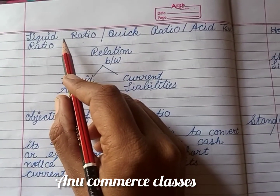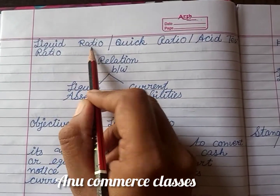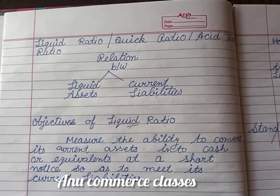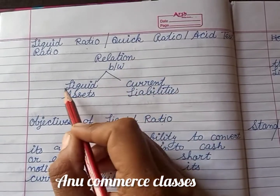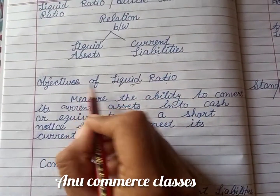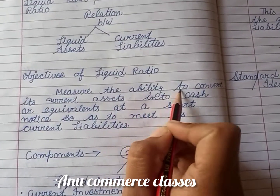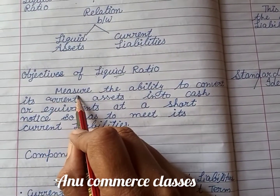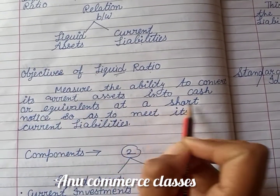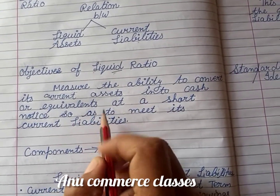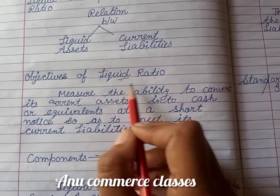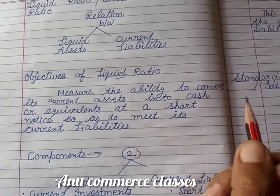Today's topic is how to calculate liquid ratio, also known as quick ratio or acid test ratio. Liquid ratio is the relation between liquid assets and current liabilities. The objective of liquid ratio is to measure the ability to convert current assets into cash or equivalents at short notice.